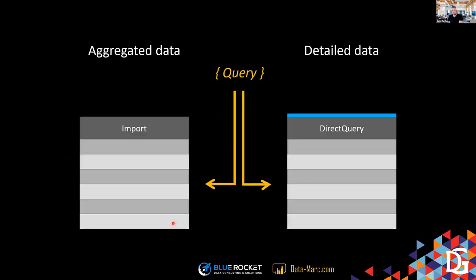When a query comes in, it checks: can I source it from the aggregated data or do I need to use direct query for the detailed data? An aggregation does not have to have the detailed data in direct query — you can also have it imported. But the biggest improvement is when you keep the detailed data in direct query mode and the aggregated data in import mode — that's where your big win will be.